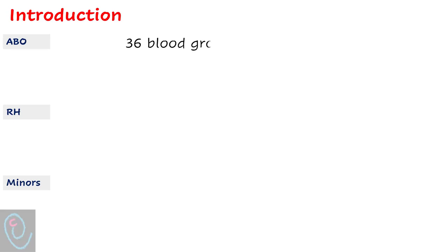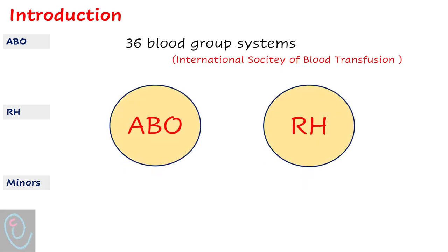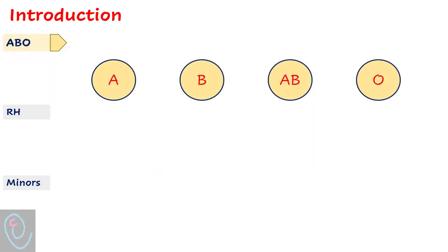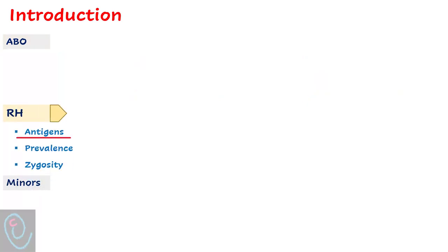Currently there are 36 blood group systems; however, the most important systems are ABO and Rhesus systems. The ABO system consists of two antigens present on the surface of red blood cells. In blood group A there is A antigen on the surface, in blood group B there is B antigen, in group AB both antigens are present, while in group O neither antigen is present.